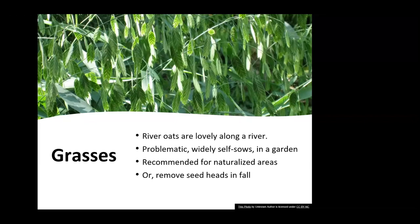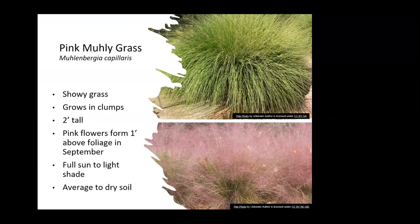Pink muhly grass is really a gorgeous grass, especially once it starts blooming. I think it's a front-yard worthy grass and I have it in several areas in my front yard — it's a great foundation planting or backdrop to other native plants. The trick with pink muhly grass is that you'll have much more success if it's planted in the spring and not the fall.